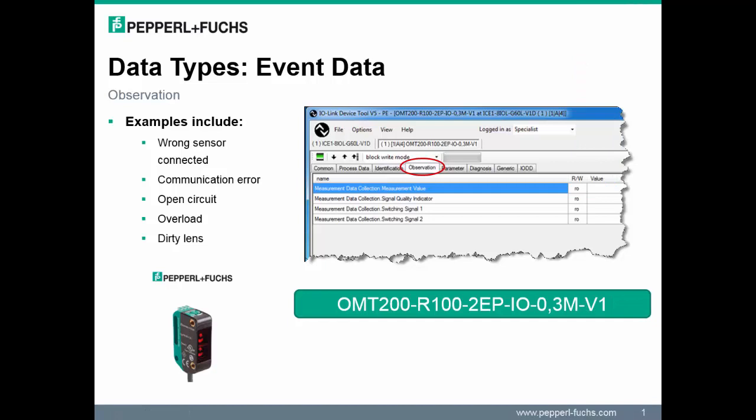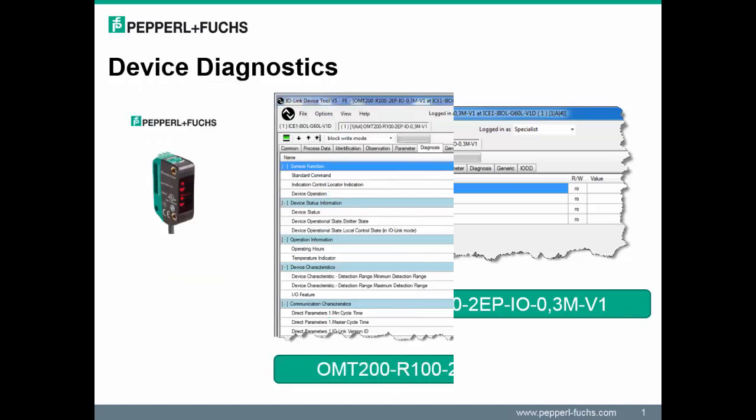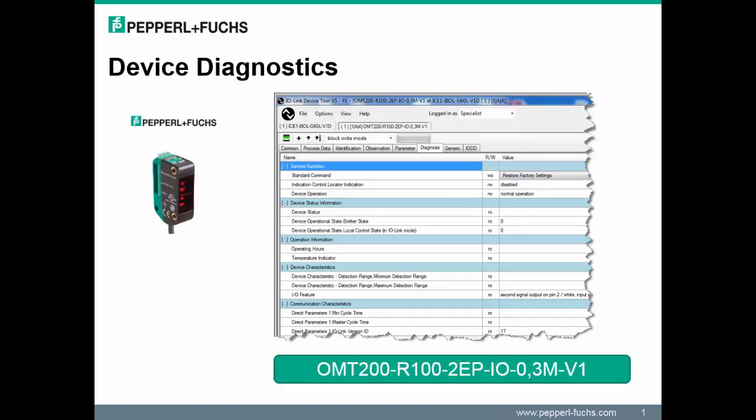Finally, the third type of data is event data. Event data is a notification or flag created when a critical event occurs. This slide takes a closer look at the event data of an R100 sensor connected to port 1. Additional device diagnostics are also available in the IO-Link device tool in the Diagnostics tab. Some additional diagnostics may include if a sensor has been bypassed or disconnected.